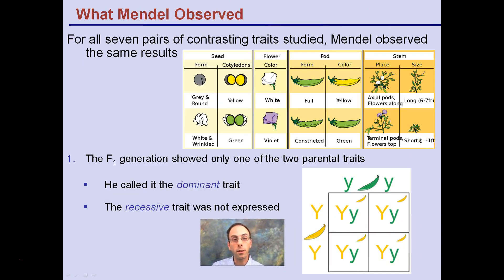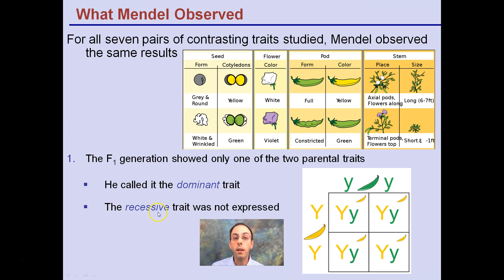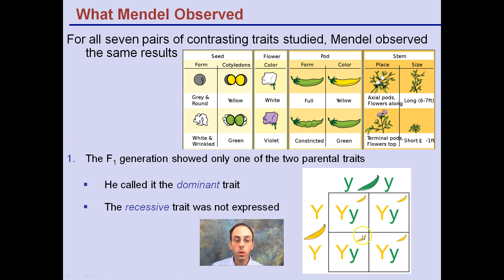What he observed from the seven pairs of contrasting traits is what he called dominant and recessive traits. Certain things would mask or hide other traits — those are the dominant traits. Recessive traits would not be expressed unless you had two alleles of that same recessive type. Recessive doesn't mean negative; it just means the trait is only shown when homozygous recessive. As with green and yellow pods — if yellow is dominant, the genes for green are there, but all pods will be yellow.